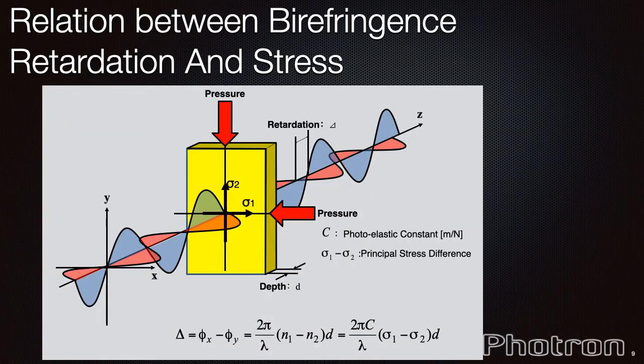As mentioned, birefringence is the optical property of a material having a refractive index that depends on the polarization and propagation direction of light. These optically anisotropic materials are said to be birefringent. The birefringence is often quantified as the maximum difference between the refractive indices exhibited by the material. Retardation values that can be determined by phase difference of the X and Y components show the internal stress within the sample being tested and are relative to the material thickness and photoelastic constant of any materials being viewed.